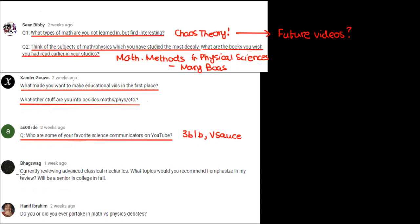And now we come to our second last question from Pagswag. Currently reviewing advanced classical mechanics, what topics would you recommend I emphasize in my review? Will be a senior in college in fall. Okay, so first of all, my answer won't be perfectly accurate because I don't know what courses you're going to be taking. But if I am to take a shotgun approach, then I would say that you should absolutely know about the principle of stationary action and the Lagrange equations. You can watch one of my videos on that if you'd like. You also want to learn about forces in non-inertial reference frames, so Coriolis forces, centrifugal forces, etc. And you want to look over rotational mechanics and coupled oscillator systems, so like the double pendulum, for example. These are the sort of high-yield things that I'd recommend, but again, I don't exactly know what courses you're taking.